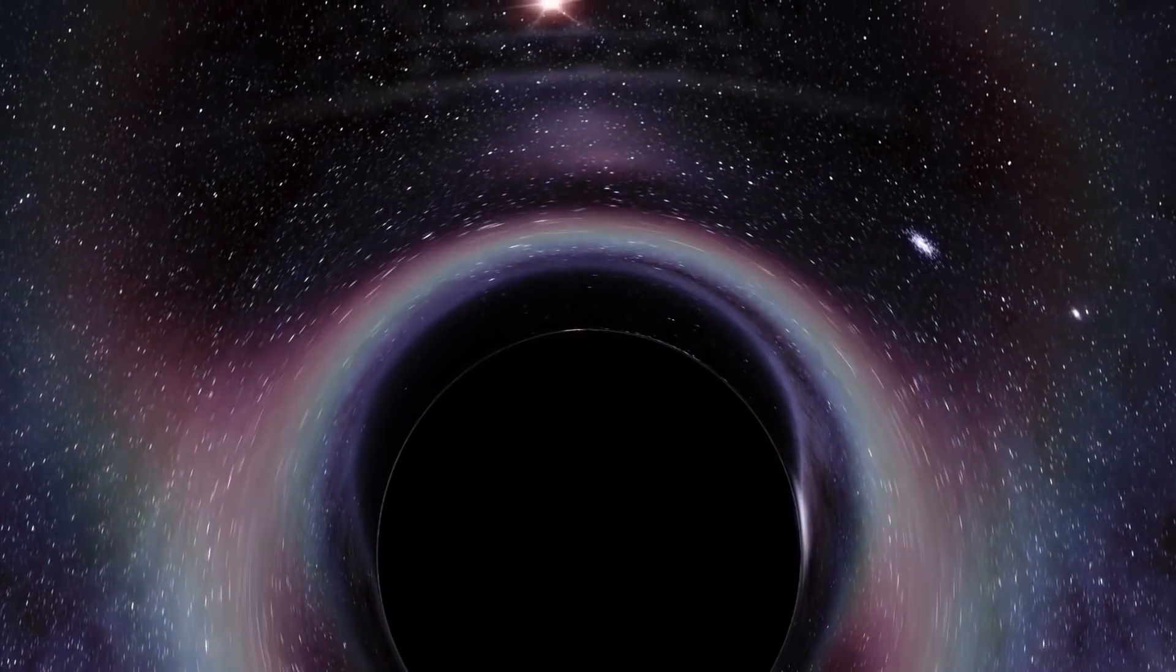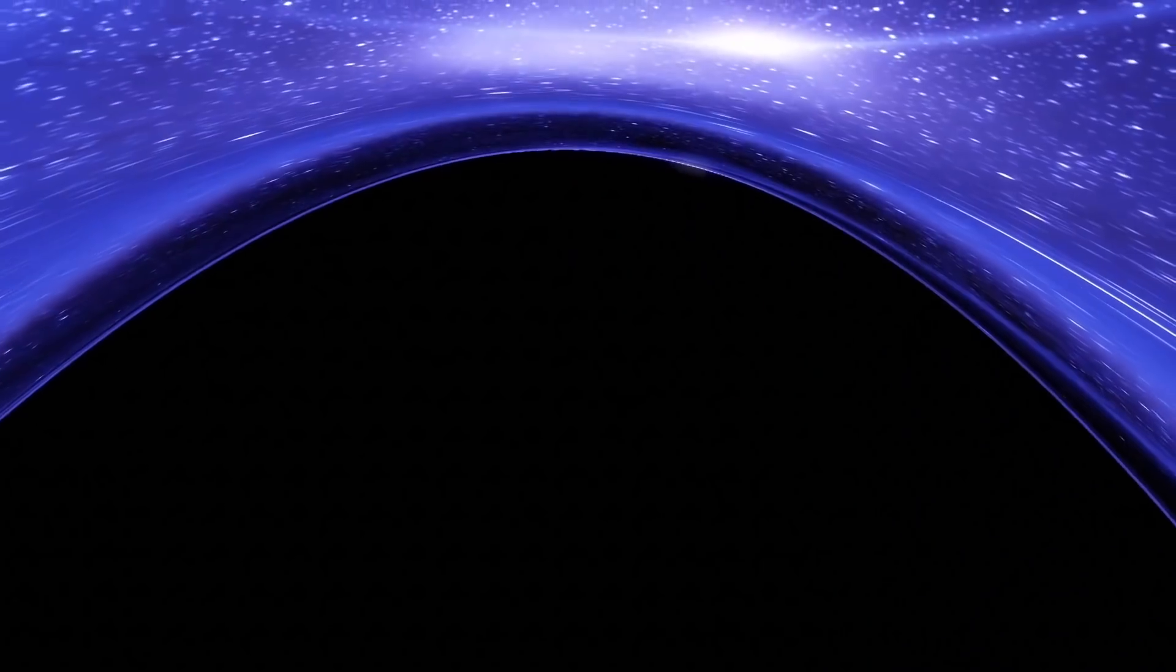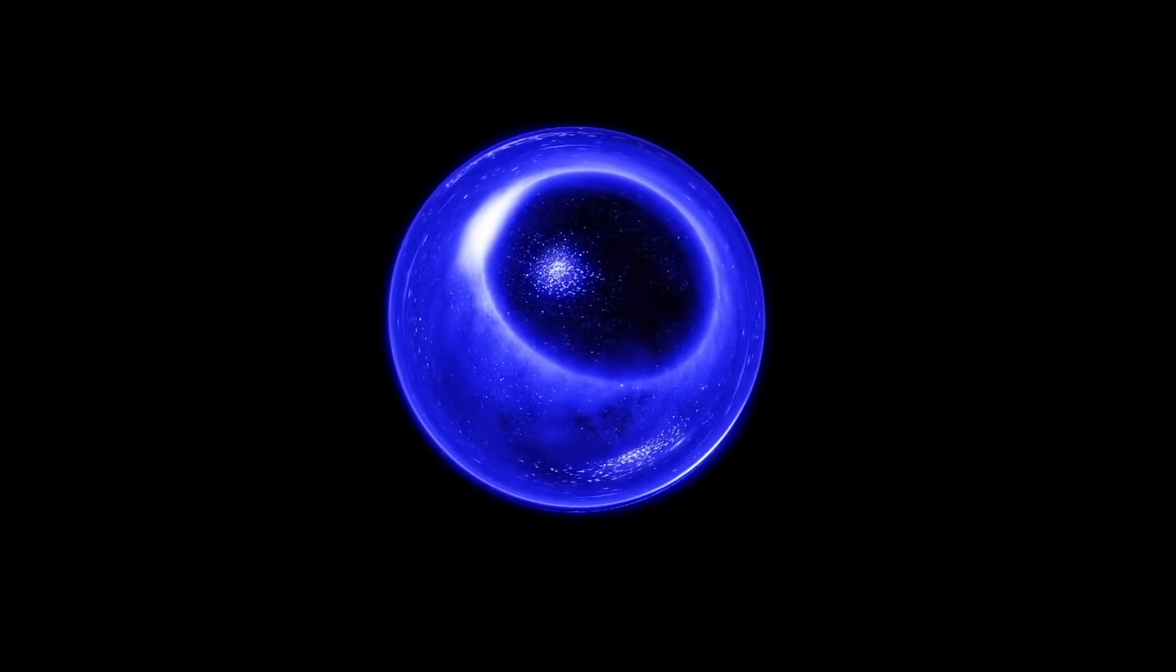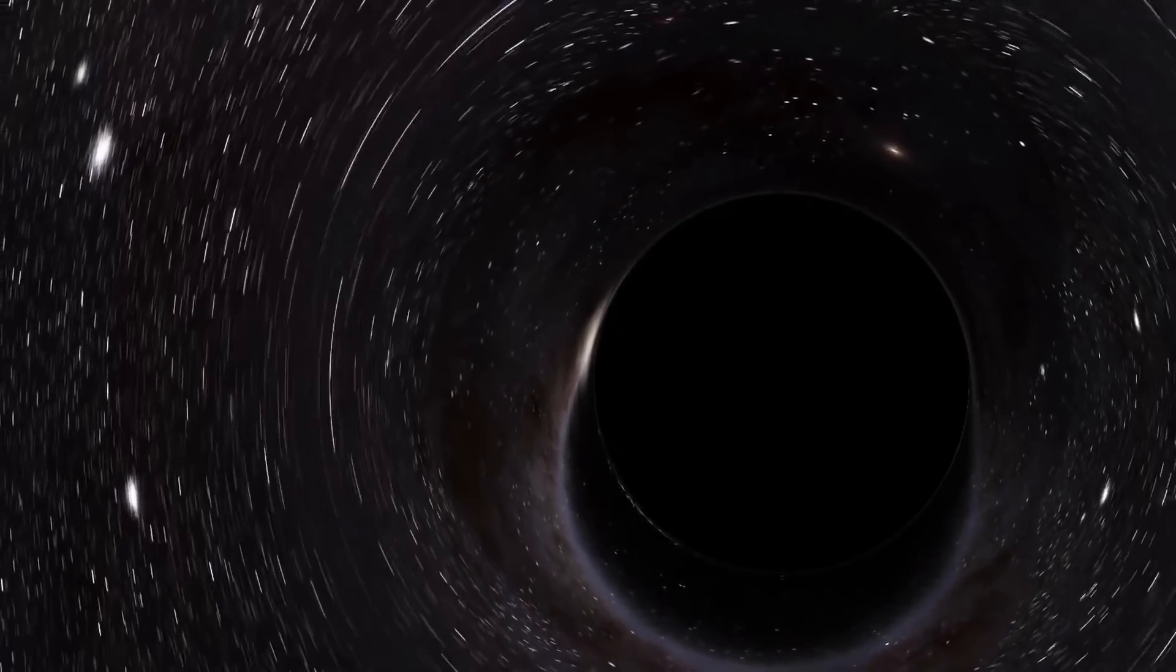The observation suggested that there was a thread of material wrapped around the black hole numerous times, similar to a yarn ball. The team believes that this debris is a shattered star that is orbiting the black hole before collapsing within it.